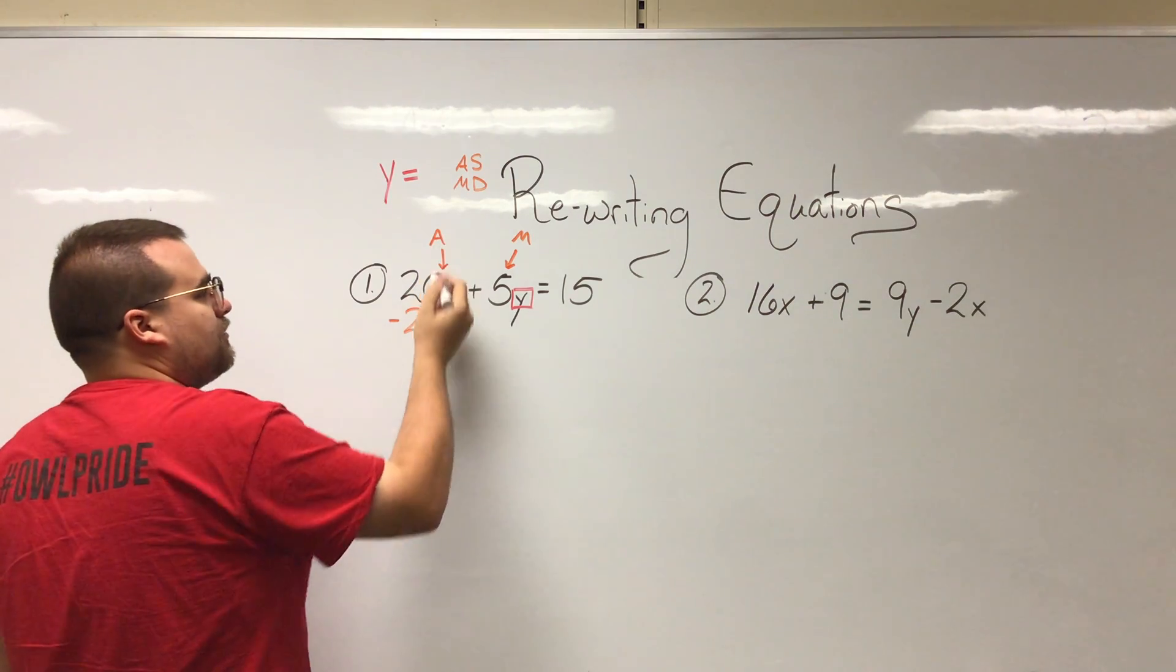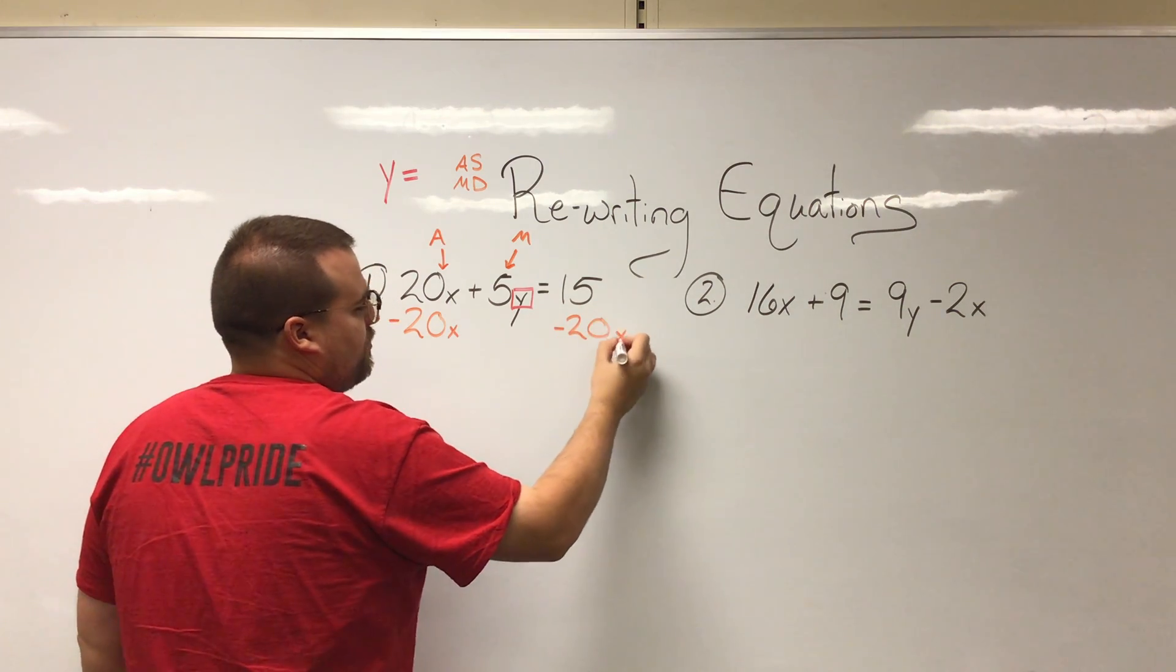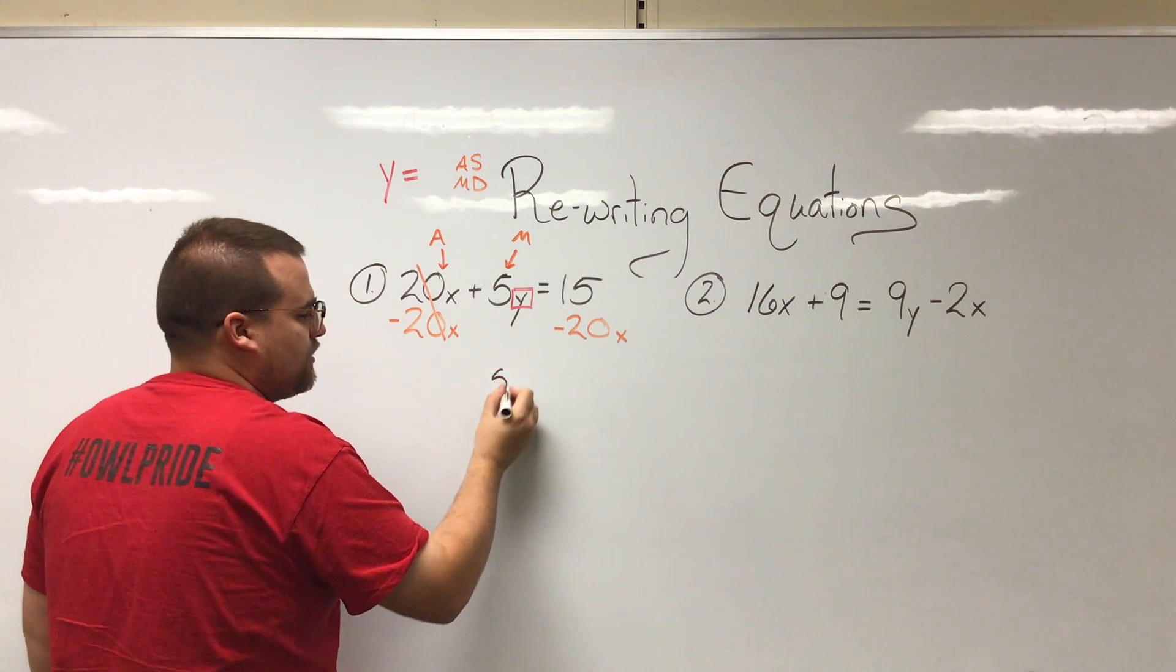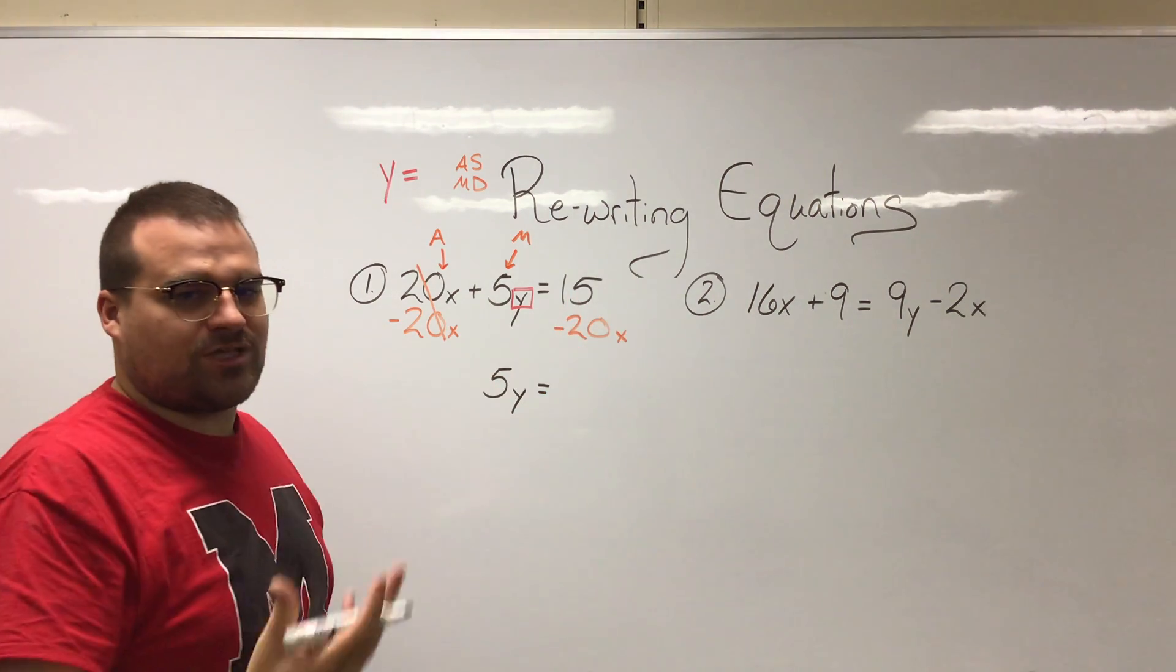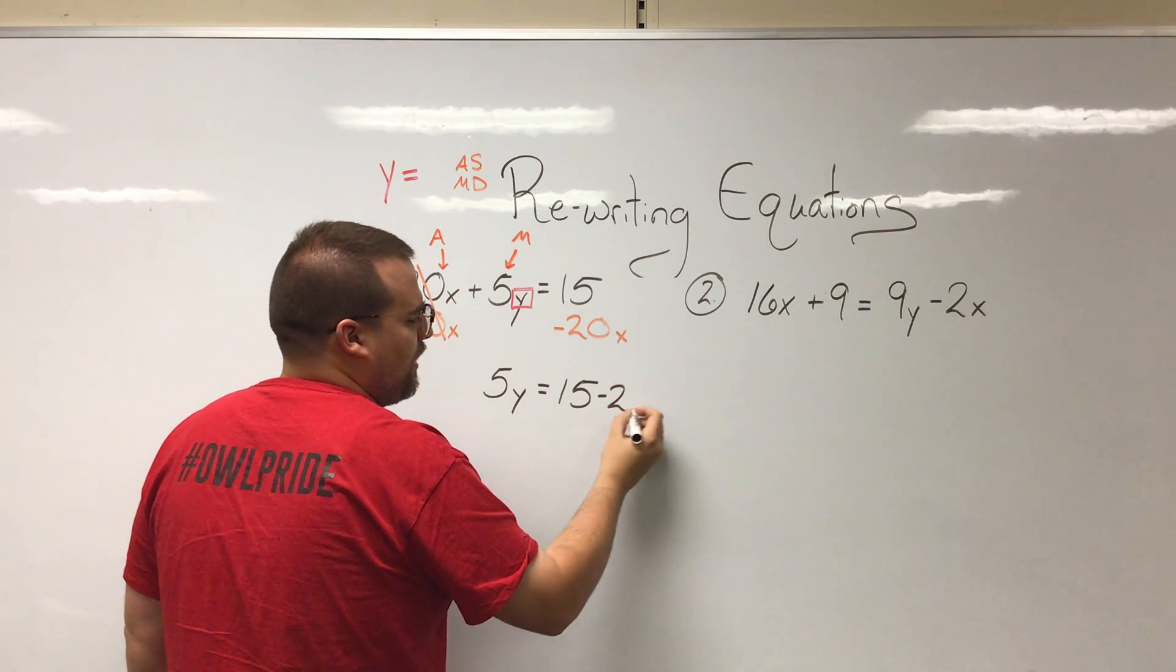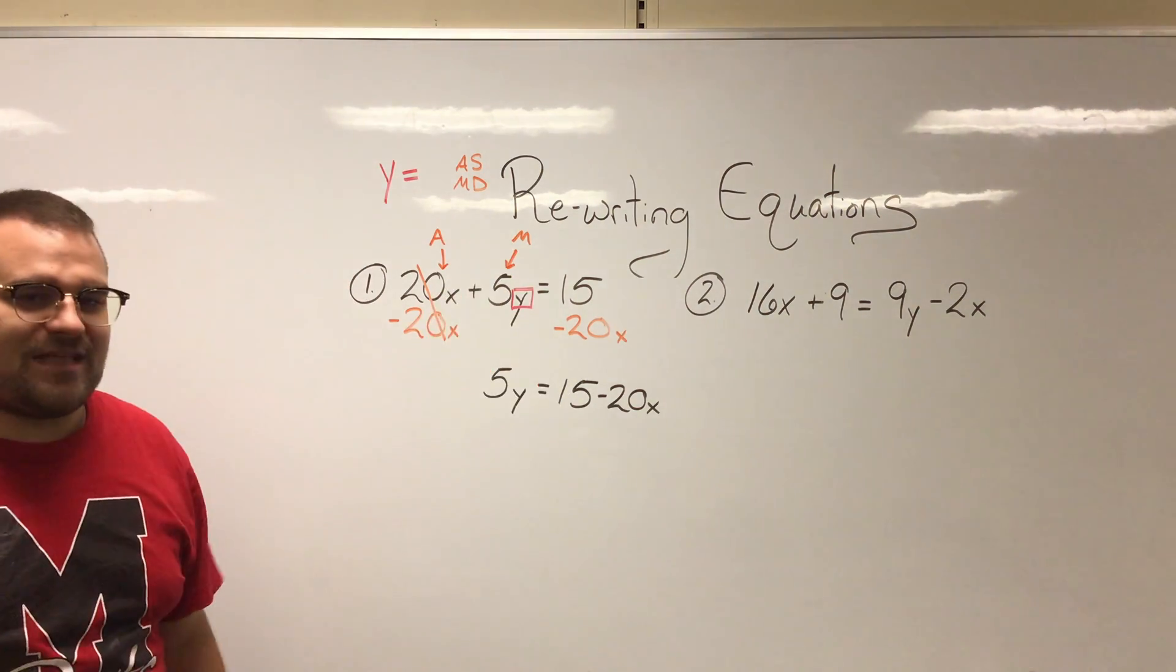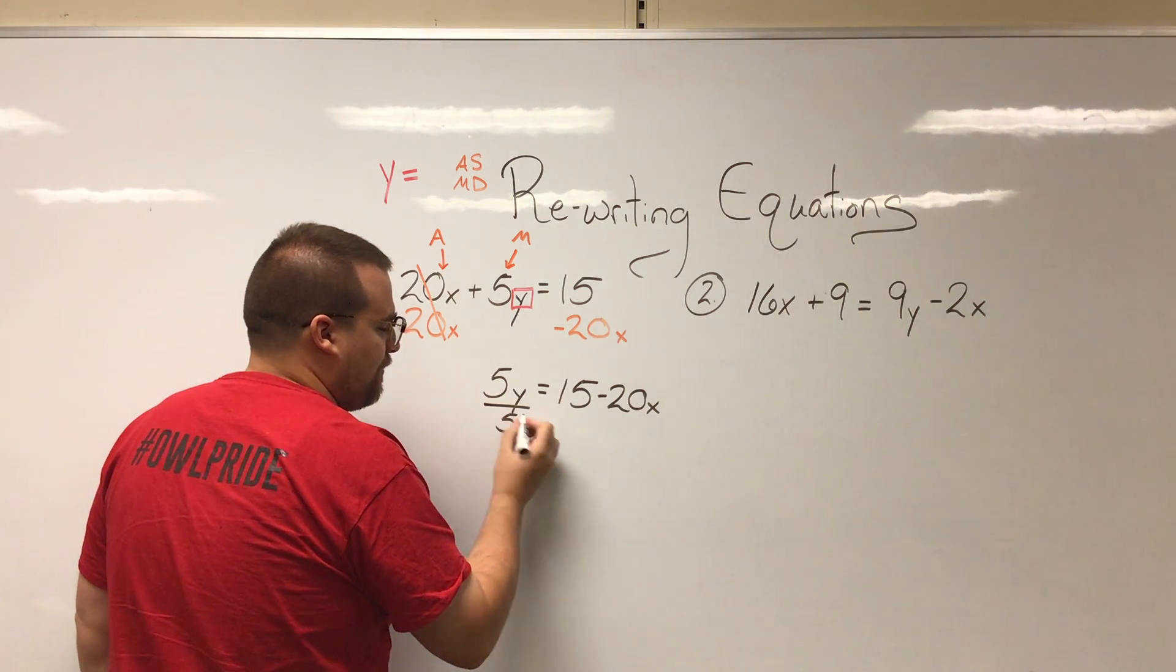The opposite operation of addition is subtraction, so minus 20x to both sides. That'll cancel these out. After canceling these out, 5y is the only thing left on this side of the equation. On this side these two terms cannot combine because they have different variable configurations, so therefore we're left with 15 minus 20x. At this point I recognize the only thing left with that y is a 5, the 5 that is multiplying it. So I can go ahead and divide. So I'm going to divide by 5.